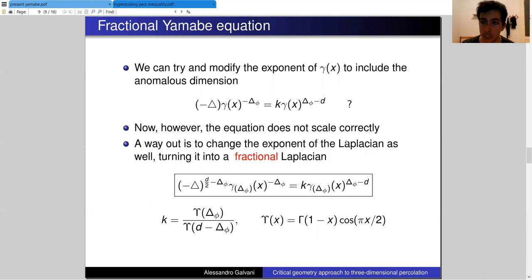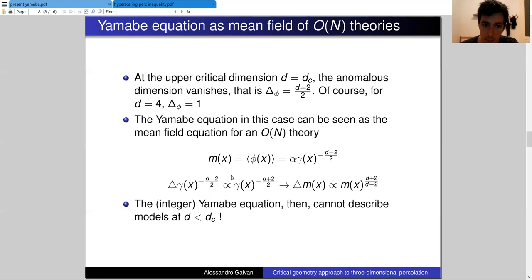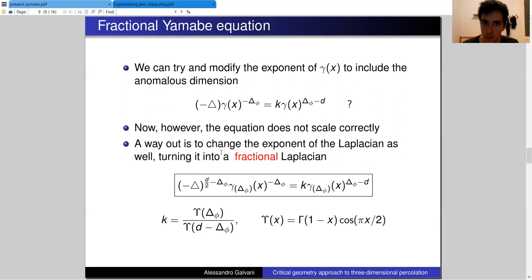This means that the Yamabe equation by itself cannot describe models which are below the upper critical dimension. The main problem is that the exponent that is present here is simply d minus 2 over 2, which is the scaling dimension of a field with no anomalous dimension. What we would like to do is to change this exponent in order to account for the anomalous dimension eta.